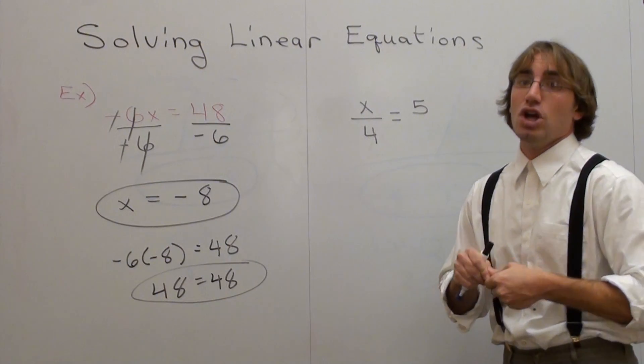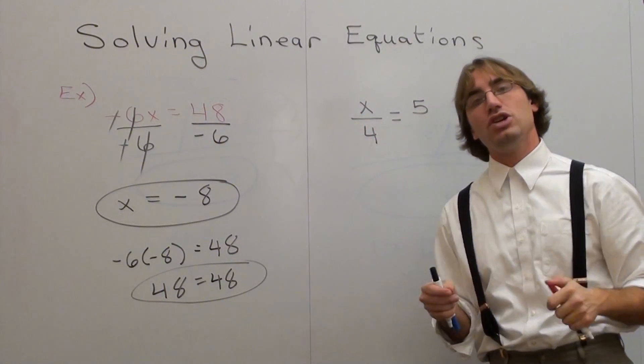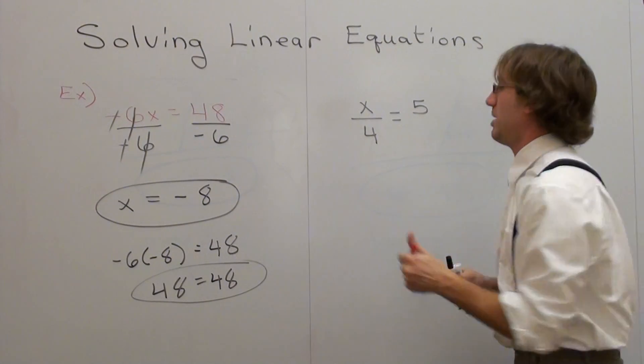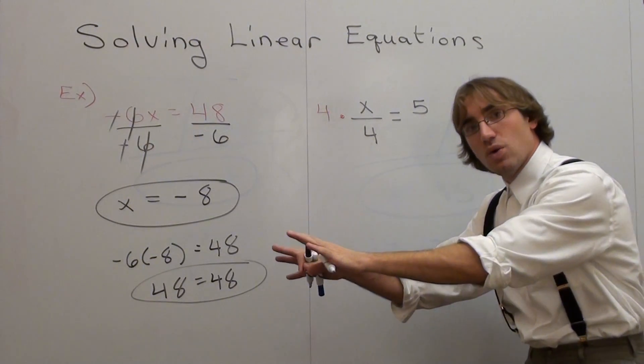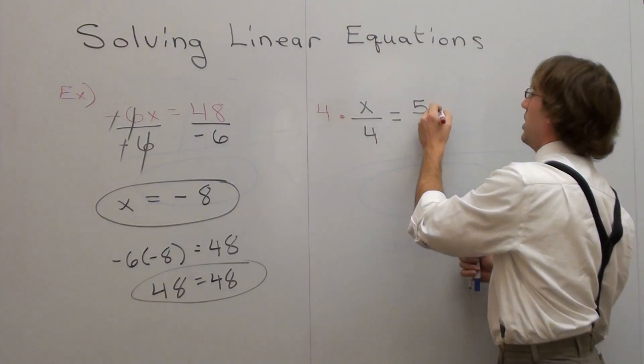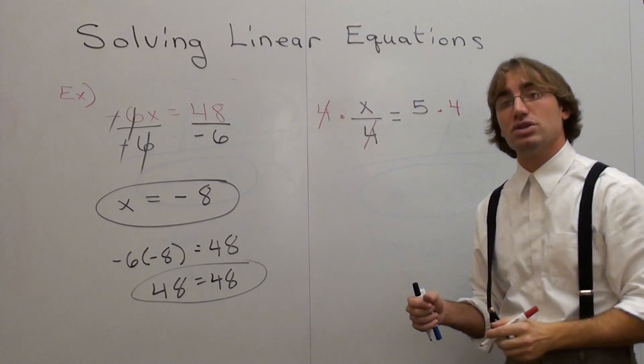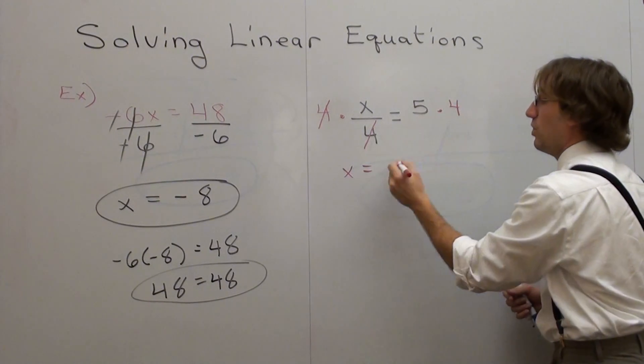So here's one way to do it. You want to get the x by itself. And it's x divided by 4. Well, how do you get rid of a divided by 4? You multiply by 4. But what you do on one side of the equation, you better do on the other side of the equation.